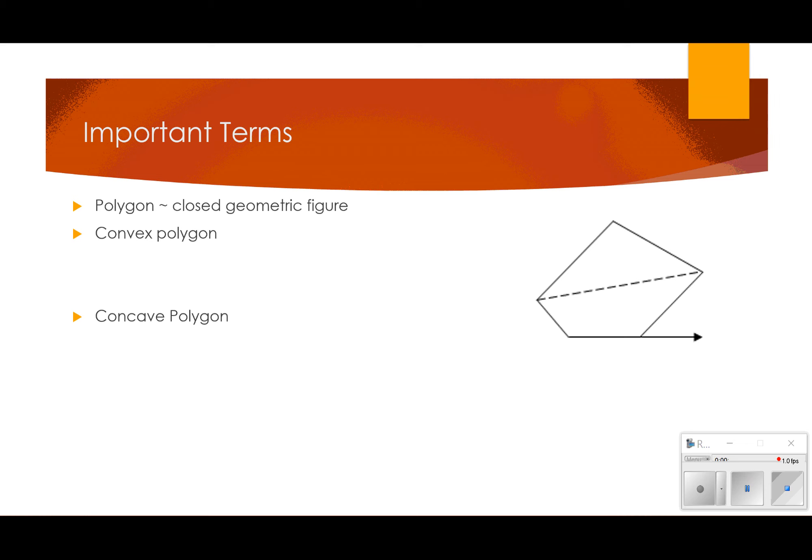A polygon is just simply a closed geometric figure with at least three sides. We have two different kinds of polygons, a convex and a concave. The concave I think is the easiest to remember because part of its side is caved in. The official definition would be that one or more of its diagonals are outside of the polygon. So this is a concave polygon, like one of the sides are caved in.